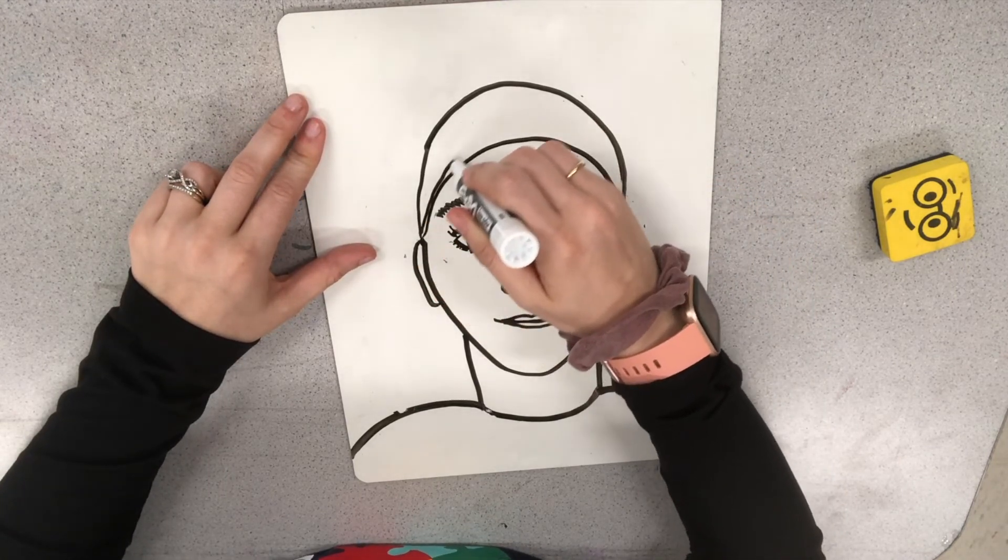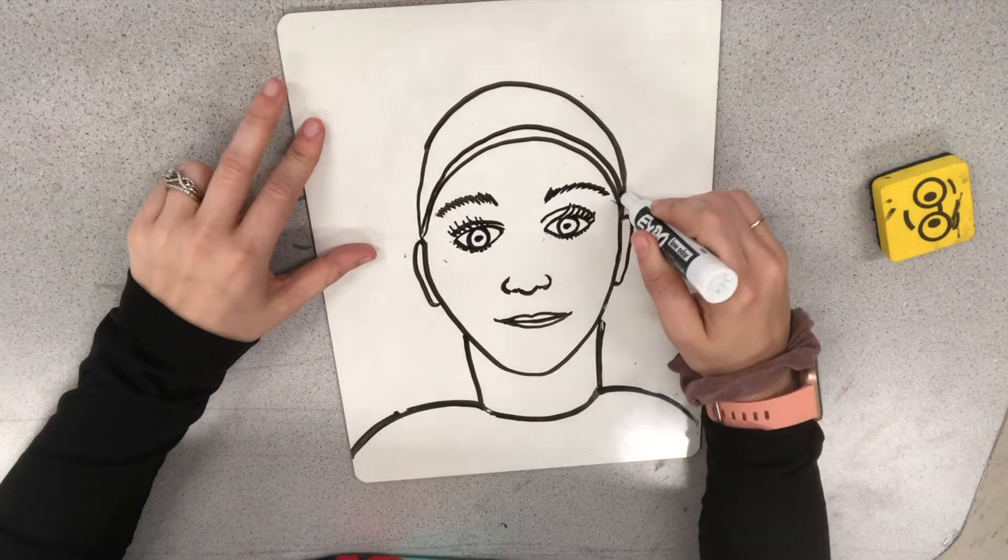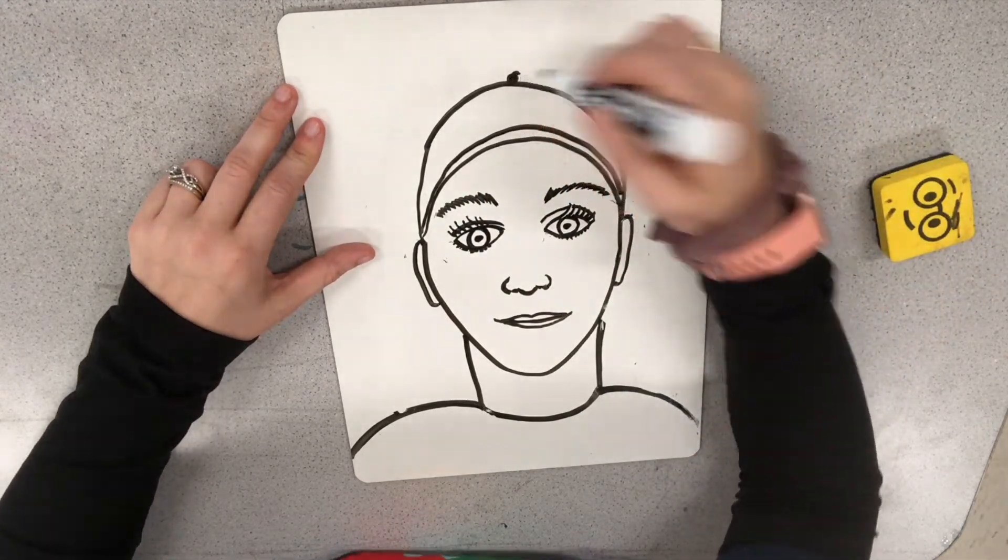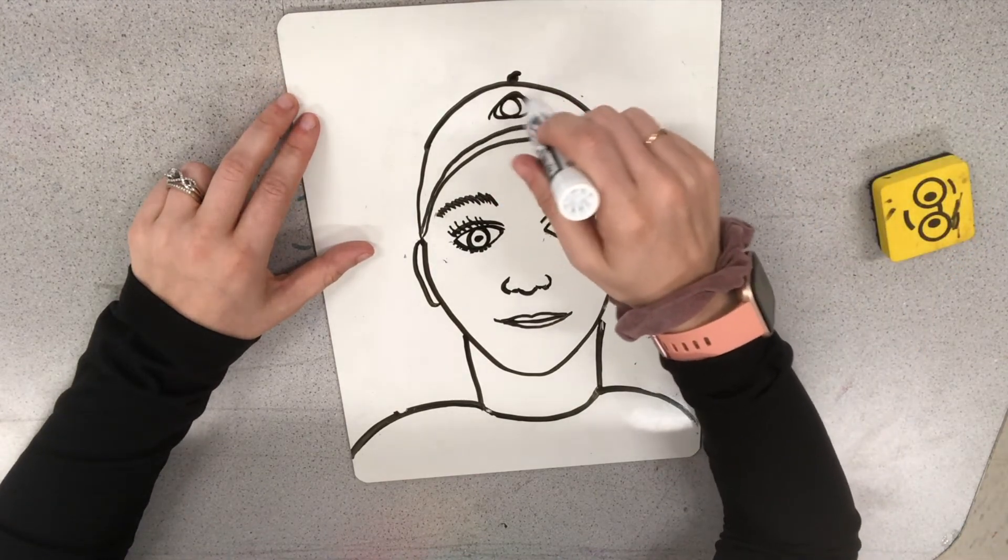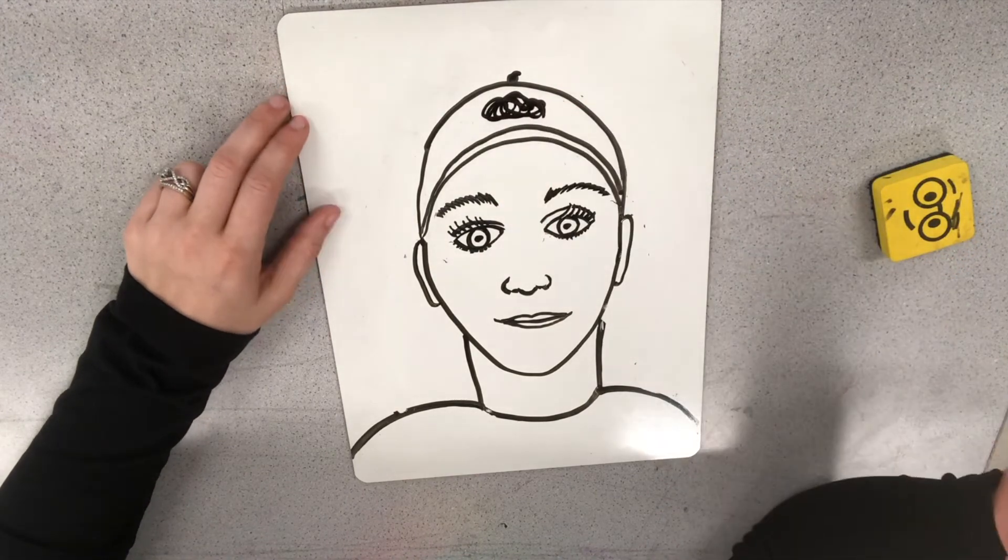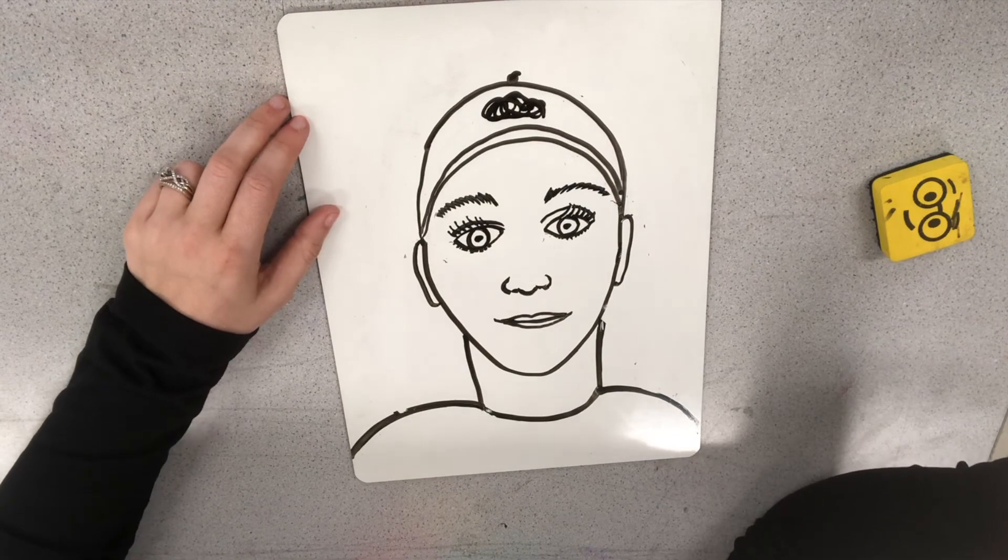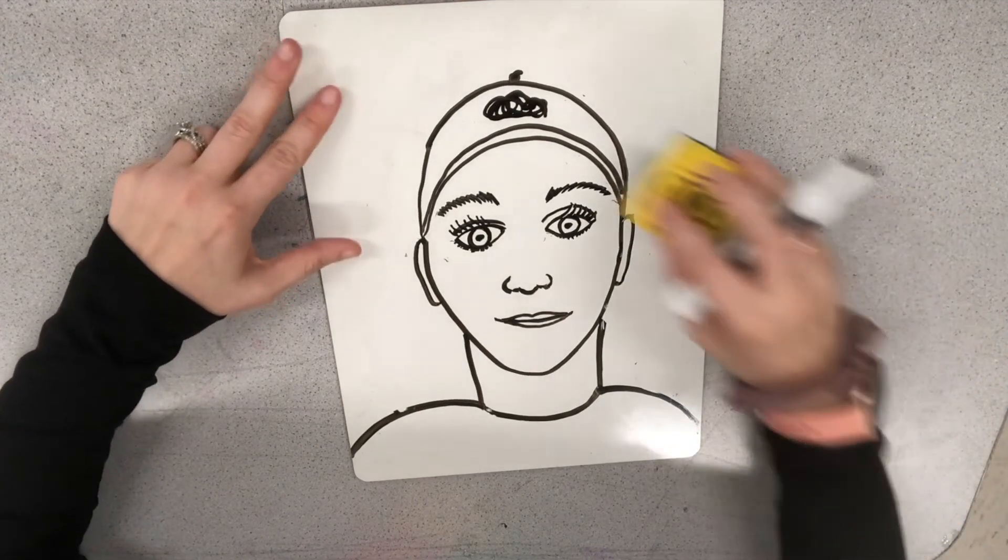Then there might be like a logo for the baseball team. Probably like right in here somewhere. So whatever the logo is, you could add that. So there's my baseball hat. Now you customize it to look like your person.